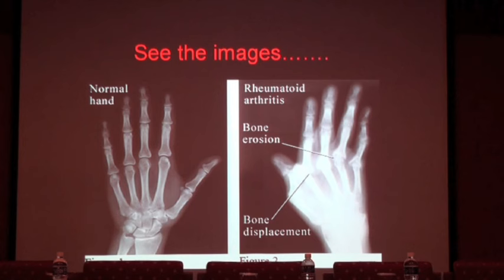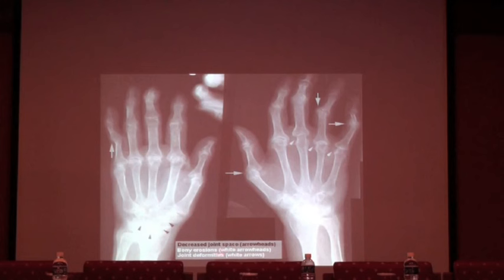You can see some other pictures — bony erosions marked with white arrowheads, and joint deformities marked with white arrows. Both joint destruction is present, and here you cannot differentiate the different carpal bones because almost all carpal bones are fused and there is no movement in the wrist at all.